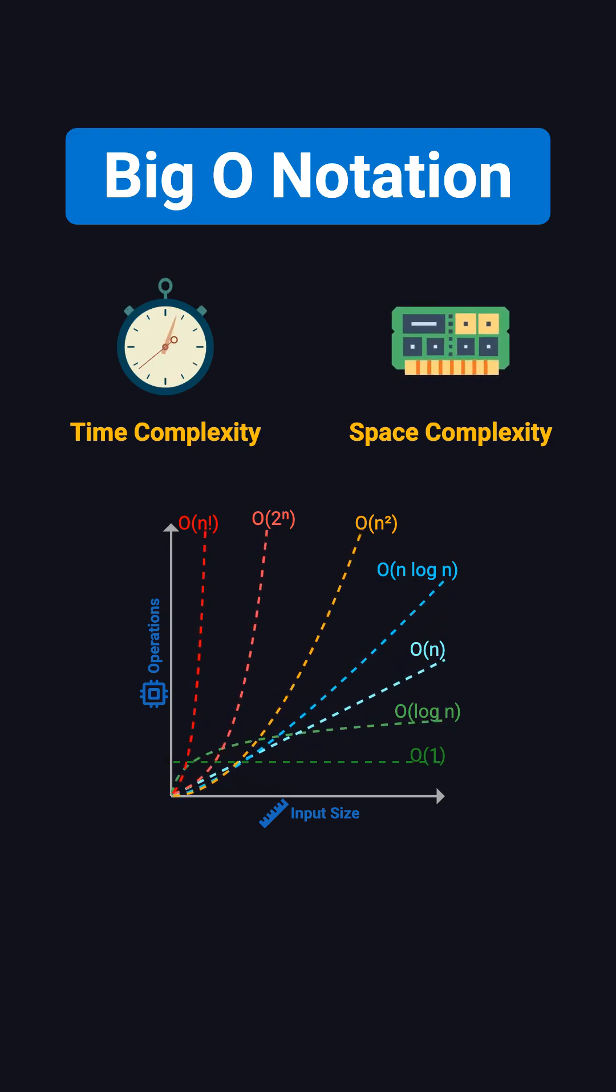For example, one algorithm might run very fast but use a lot of memory, while another might use very little memory but take longer to run. This is where we need to make trade-offs when designing algorithms.